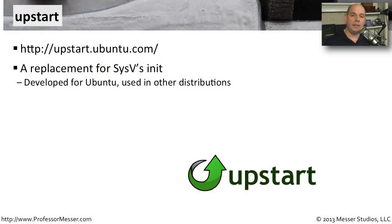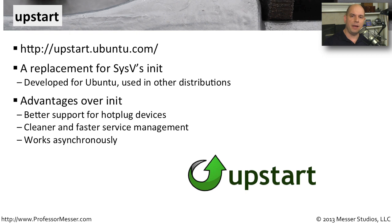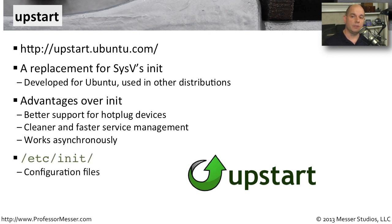Upstart is intended to be a replacement for init. It was developed for Ubuntu and you can find it at upstart.ubuntu.com. A lot of advantages come with upstart: better support for USB hot-plug devices, faster service management, and it handles dependency problems we discussed. It works asynchronously, meaning it can run multiple scripts simultaneously and get your system running faster. Configuration files are in the /etc/init subdirectory. The application that controls this process is called initctl, which we'll use to control upstart processes.